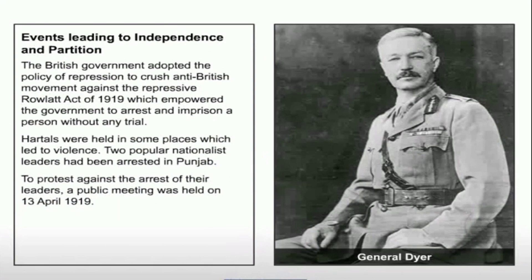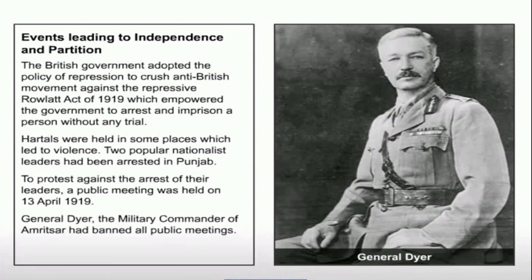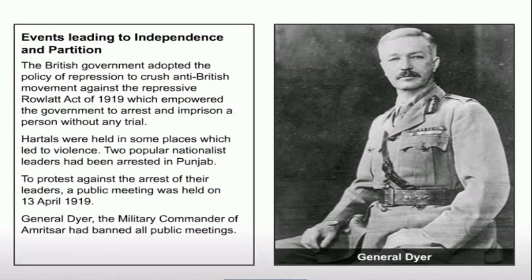To protest against the arrest of their leaders, a public meeting was held on 13th April 1919. General Dyer, the military commander of Amritsar, had banned all public meetings.